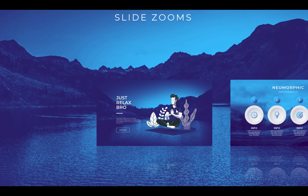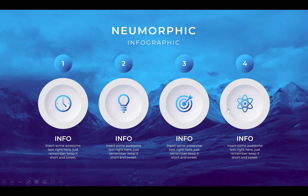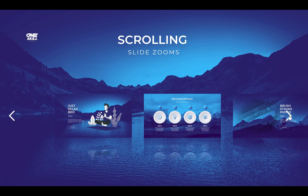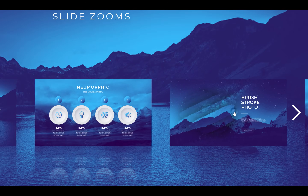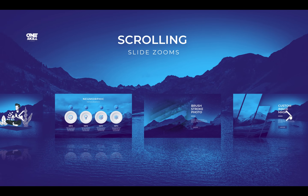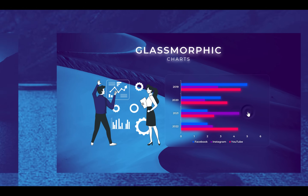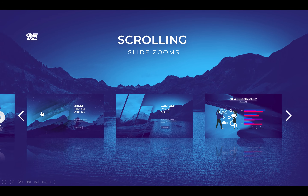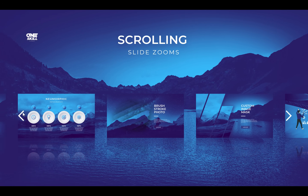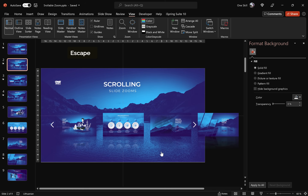All slides are ready — let's check them out on full screen. The slide zooms are working: neomorphic infographic, awesome! Scrolling to the right gives us a brush stroke photo, that's awesome. Scrolling again — glass morphic charts, that's good. Scrolling to the opposite side also works fine. Now let's add one more feature to this awesome navigation that will allow us to quickly scroll through all of the slide zooms.